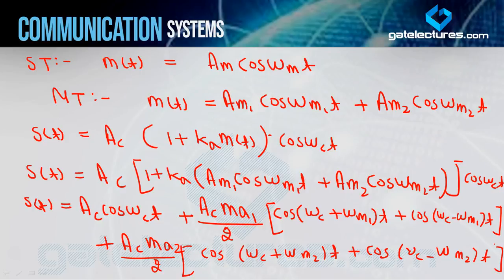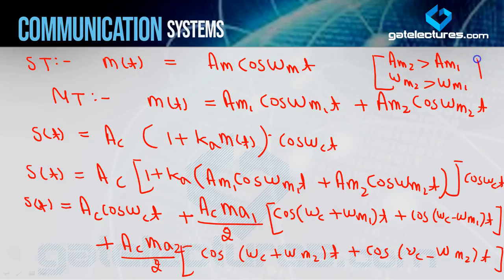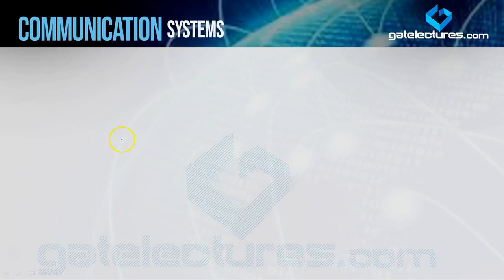यहाँ पर हम एक assumption ले सकते हैं: Am2 is greater than Am1, and ωm2 is greater than ωm1. इस assumption की वजह से मुझे spectrum बनाने में बहुत आसानी होगी। तो next slide में हम लोग spectrum draw करते हैं S(f).